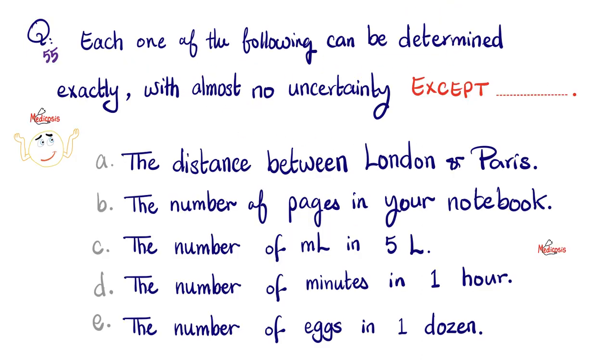Next, each one of the following can be determined exactly, precisely, with almost no uncertainty, except what? Please pause. It is true that each litre has 1000 mLs, which means 5 litres have 5000 mLs precisely by definition, which means this cannot be the answer because it says except. How about 1 hour? It has 60 minutes by definition, which means we are precise, exact here, no uncertainty, which means D cannot be the answer. I know that a dozen of everything has 12 of that thing, so a dozen eggs is 12 eggs precisely. The number of pages in your notebook could be counted precisely with no ambiguity. However, the distance between London and Paris is estimated. How about your height? Same idea. Estimated. There is some uncertainty. It can never be 100% accurate. So the correct answer here is A.